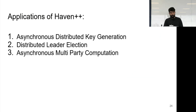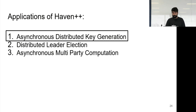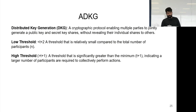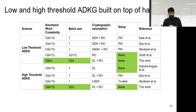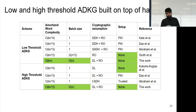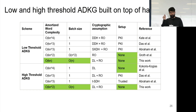There are many applications for Haven++: asynchronous distributed key generation, circuit leader election, and asynchronous multi-party computation in general. ADKG allows a group of parties to have a public key whose secret key is shared among parties without any single party knowing it. A low threshold ADKG requires fewer than T+2 parties to reconstruct the secret key; a high threshold ADKG requires more than T+1. Haven++ enables a low threshold ADKG with optimal amortized word complexity O(KN) when the batch size is O(N), without a trusted setup, using discrete log hardness and random oracle model assumptions.